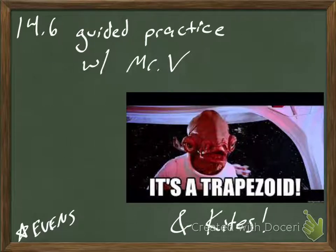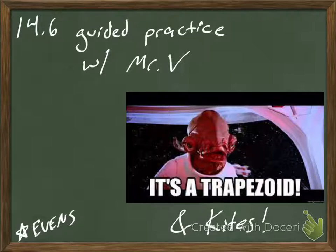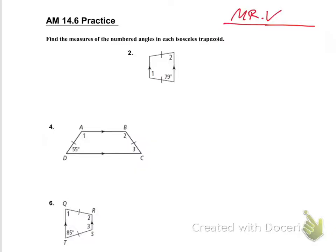This is the 14.6 Guided Practice. I'm going to be talking about trapezoids and kites, and I'm going to be doing the evens. For number two here, we know that this side is equal to this side, and that these sides are parallel.